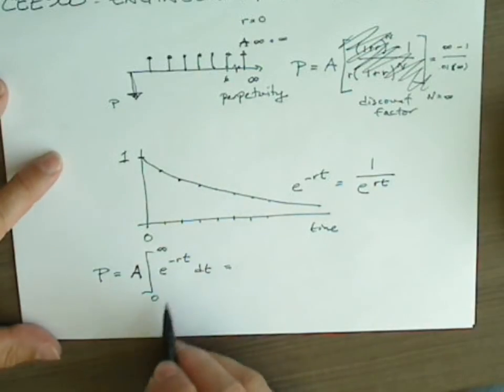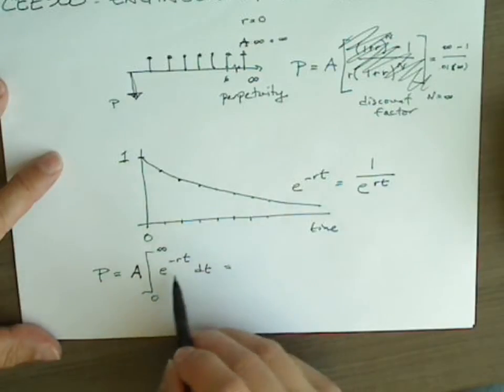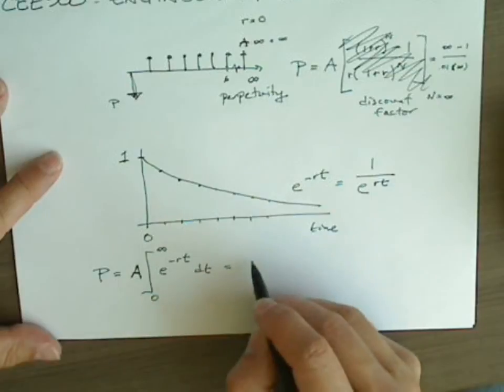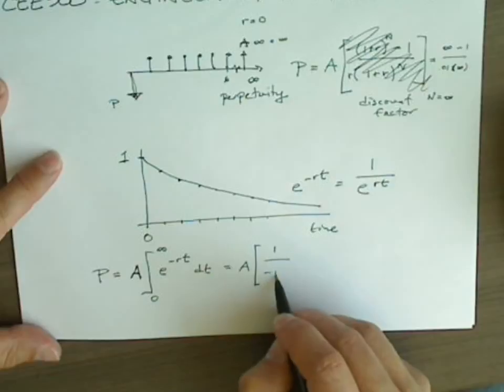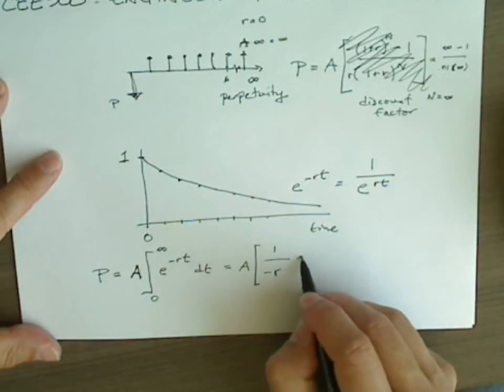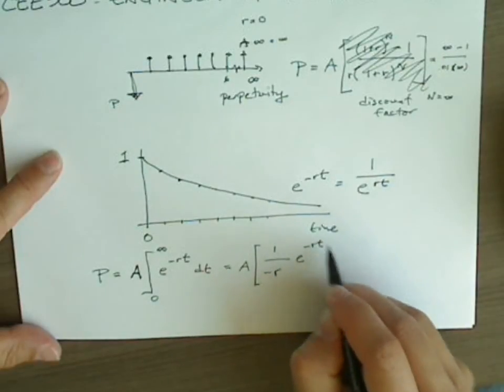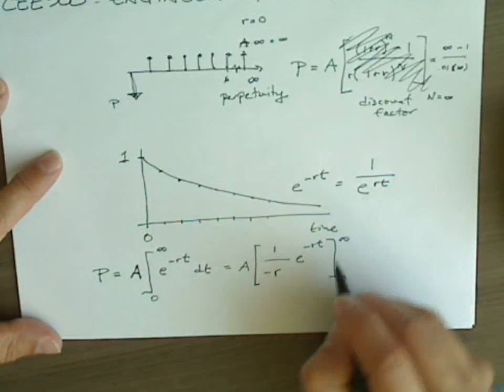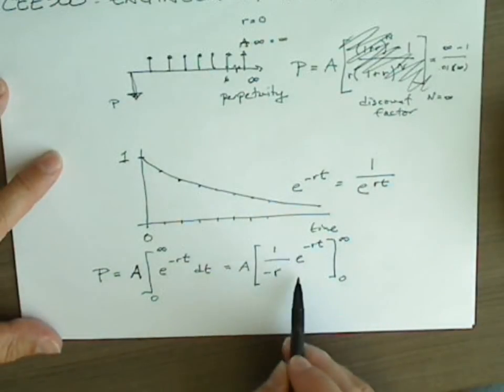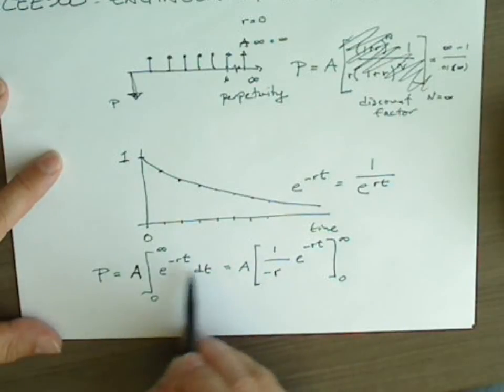So let's look at this integral. It turns out it's fairly straightforward. The integral of e to the x is e to the x. So, when we integrate e to the negative RT, we get something that looks like this: 1 over negative R, e to the negative RT. And of course, we have to evaluate that from 0 to infinity. And you can check this by taking the derivative here, and you'll get this expression.